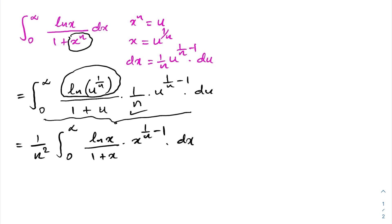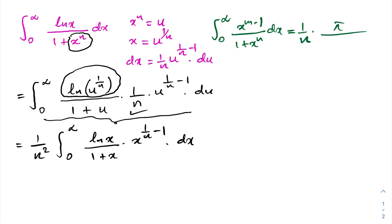To evaluate this integral I will use a result from a previous video. The integral from 0 to infinity of x to the m minus 1 over 1 plus x to the n, dx equals 1 over n times pi over sin of pi m over n. A link to that video will be in the description.